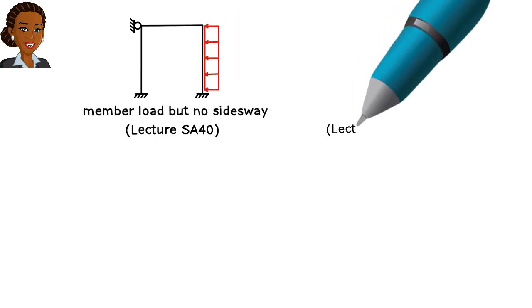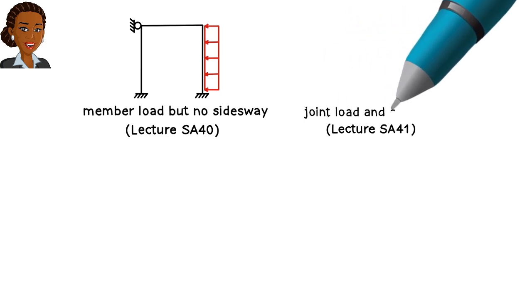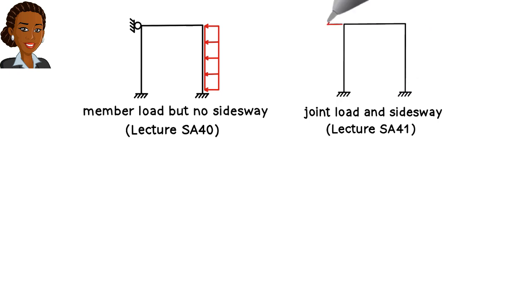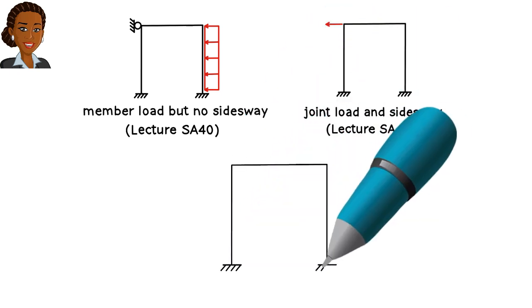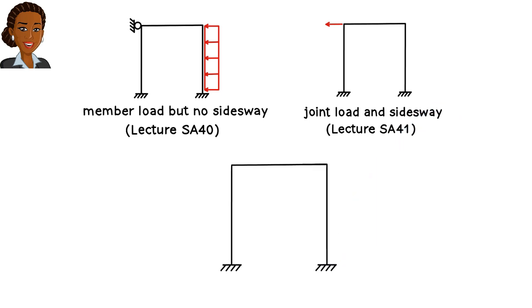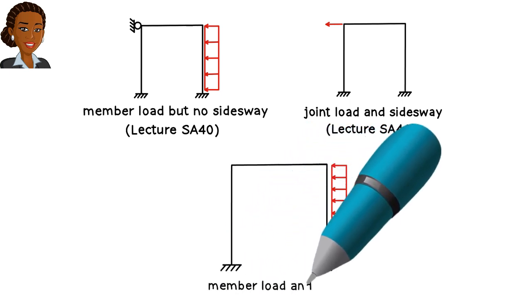And in lecture SA41, we showed how to analyze a frame with side sway due to a horizontal joint load. Here we are facing a different scenario. We have a frame that undergoes side sway due to a member load, not a joint load.